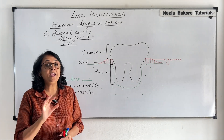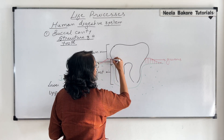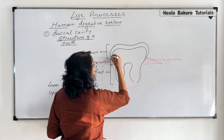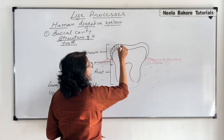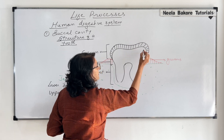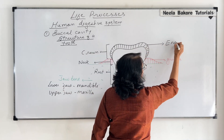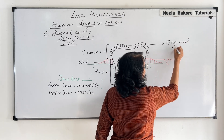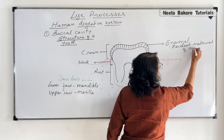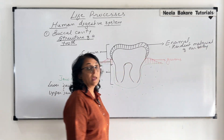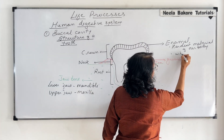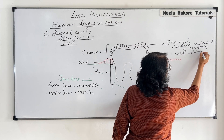In the crown part we see a white shiny substance. Only in the crown part there is this white shiny substance which is known as the enamel. This enamel is the hardest part of our body — it is the hardest material of our body and it is a very white and shiny substance.